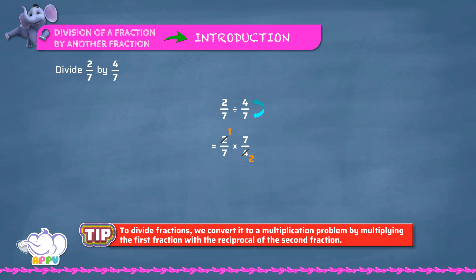7 divides 7 once, and 7 divides 7 once. We multiply the numerators: 1 times 1 equals 1. We multiply the denominators: 1 times 2 equals 2. This is equal to 1/2. The answer is 1/2.